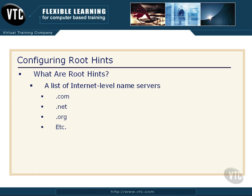So if I try to go to Microsoft.com and my DNS server doesn't have that IP address, it is going to jump out to these internet-level name servers. It's going to go to the one that's in charge of the .com listings and ask it for an IP address for Microsoft.com to see if it has one listed.